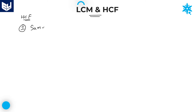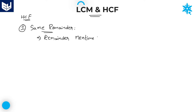The first model is same remainder HCF first model — same remainder. There are two cases here. One is remainder mentioned, meaning the remainder is given in the problem. The second case is remainder not mentioned. I will explain the difference between remainder mentioned and remainder not mentioned.